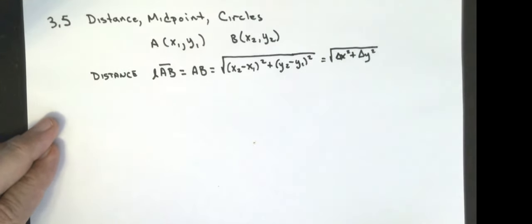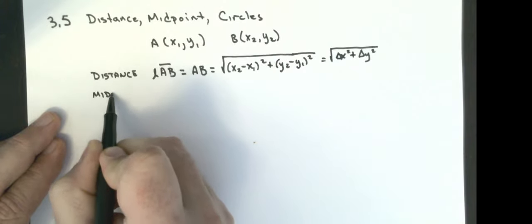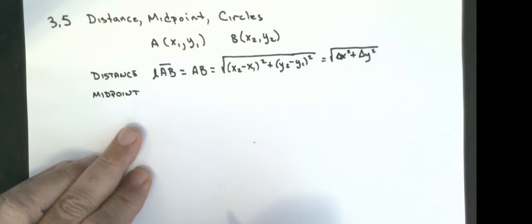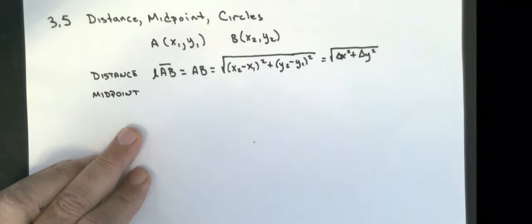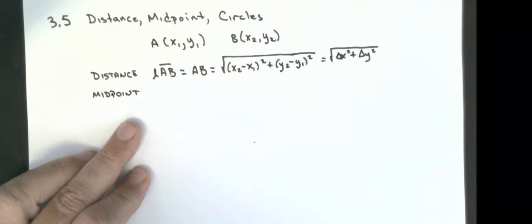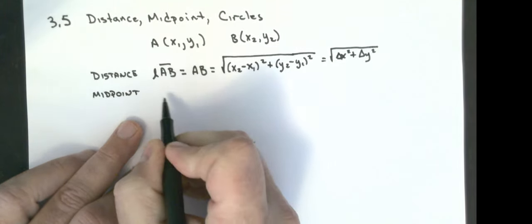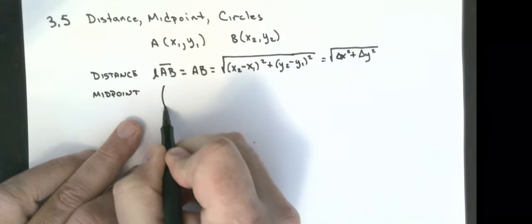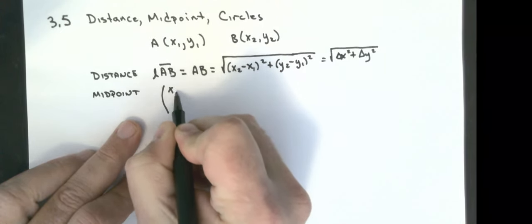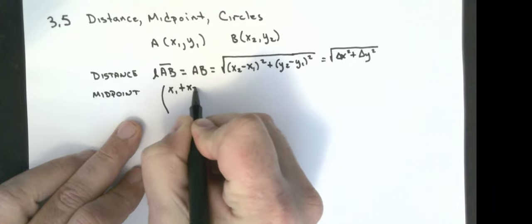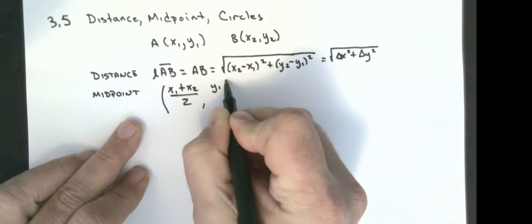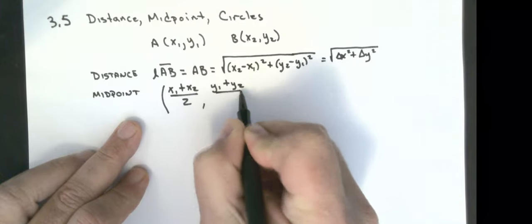The midpoint is going to, I want to find the midpoint of AB. All I'm going to do is the x-coordinate, I add up the x's and divide by two, and I add up the y's and divide by two.